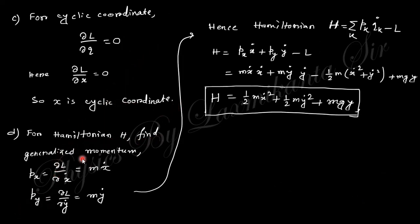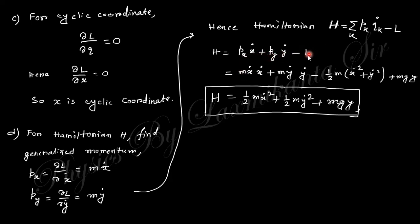For the Hamiltonian, we first find the generalized momenta: px = ∂L/∂ẋ = mẋ and py = ∂L/∂ẏ = mẏ. The Hamiltonian is H = Σpk·q̇k − L = px·ẋ + py·ẏ − L. Substituting px = mẋ and py = mẏ, we obtain the final expression for the Hamiltonian.